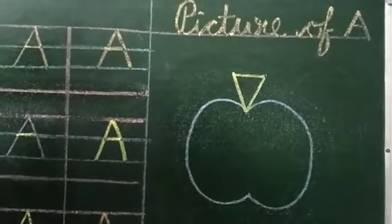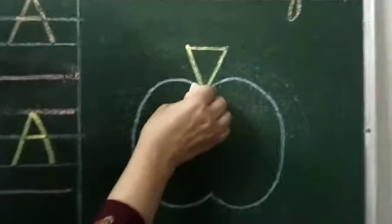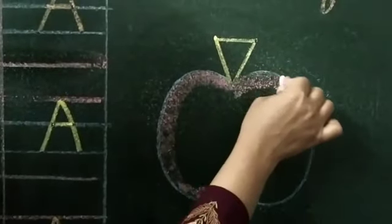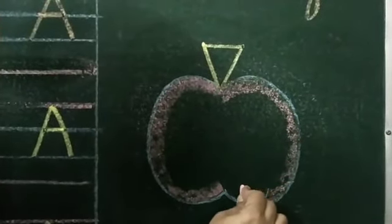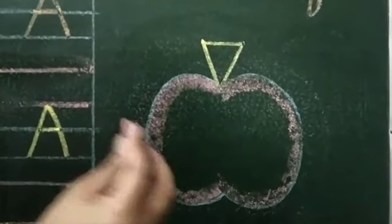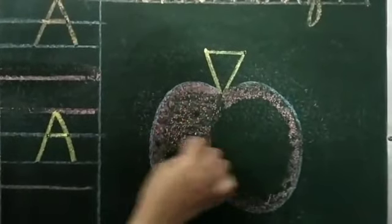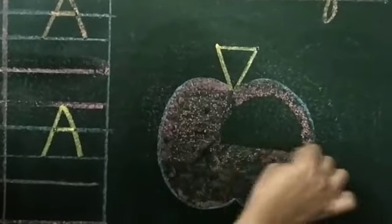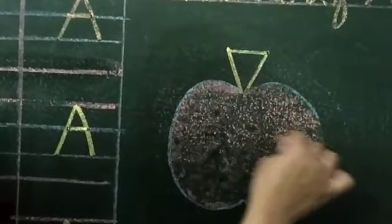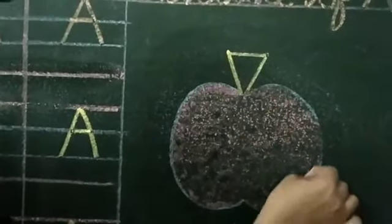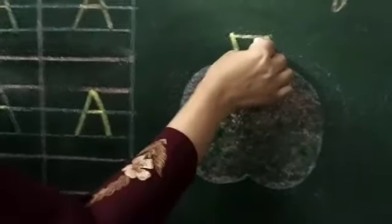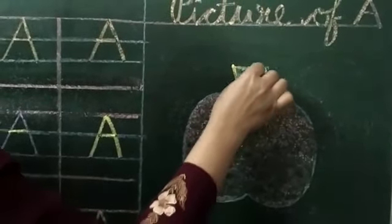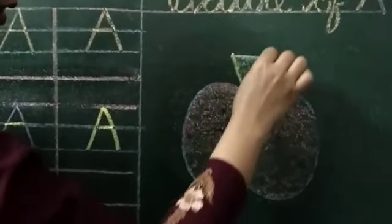Now take out your colors — we will color the apple. What is the color of an apple? Red! Very good. Take out your red color and do the outline first. When we do the outline, our color doesn't go outside. Now fill the color inside the apple, moving your color in one direction only, and don't leave any white space. Here we will do green color — take out your green color and do this part green, like this.